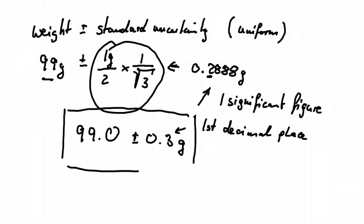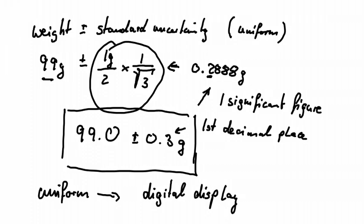Now when should we use a uniform distribution? Uniform distribution should be used when we don't know anything about the position of our measurement, and uniform distribution should be used when we, for example, use a digital display, like we had with the kitchen scales. If we use an analog display, we use a different distribution as I will explain in the next video.